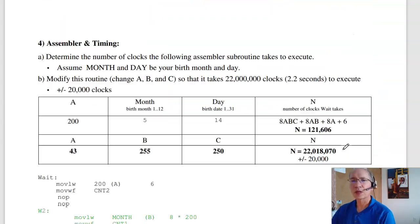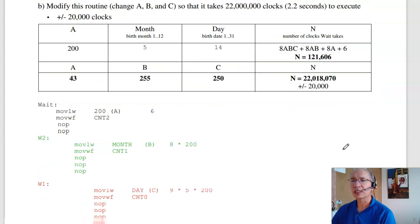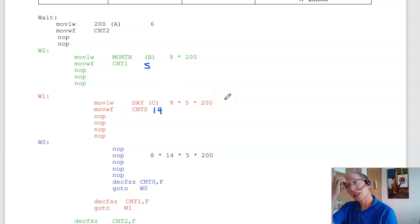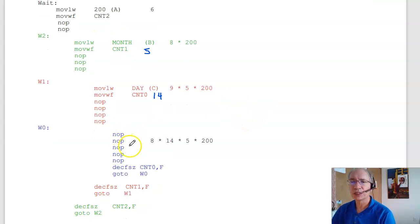Problem number 4 is timing. How long does this routine take? Assuming that B is your birth month. For me, that would be 5. Day is your birth date, 14. To count clocks, you count instructions plus 1 for go to. So the blue section code has 1, 2, 3, 4, 5, 6, 7, plus 1. That takes 8 clocks to execute. That's called 14 times 5 times 200 times.